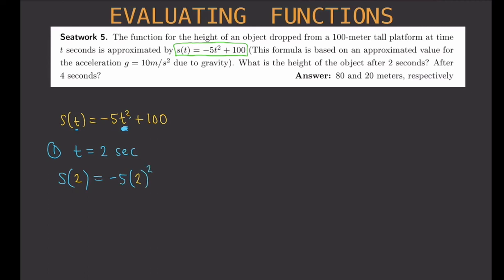And then you square that, because you have a square. So negative 5 times 2 squared plus 100. And then simplify. So minus 5 times, well, 2 squared is 4. So that's 5. Negative 5 times 4 plus 100. That is equal to, so negative 5 times 4 is minus 20 plus 100. And that is equal to 80.